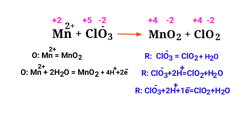Now make electron gain equivalent to electron lost. The electrons lost in the oxidation half reaction must equal the electrons gained in the reduction half reaction. The oxidation half reaction has two electrons, but the reduction half reaction has only one electron. To equalize them, multiply the reduction half reaction by a coefficient of 2.